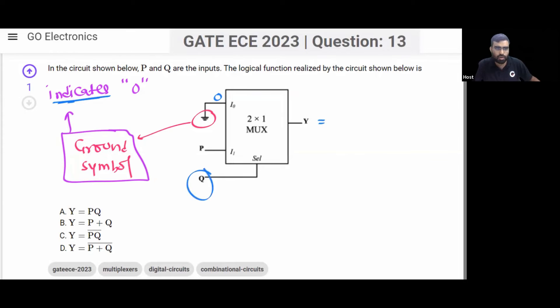When this select line is 0, when you take select line equal to 0, then output will be I0. When you take select line equal to 1, then output will be I1.